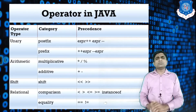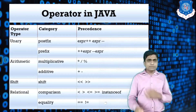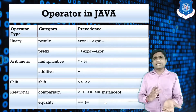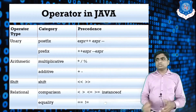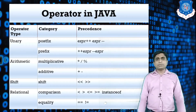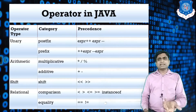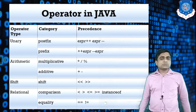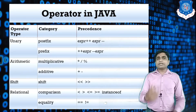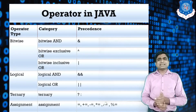Another operator is the relational operator. If you want to compare values or check equality between two variables, you can use the relational operator. The different relational operators available include: less than, greater than, greater than or equal to, less than or equal to, and a new one — the instanceof operator, used to check the instance of a class.